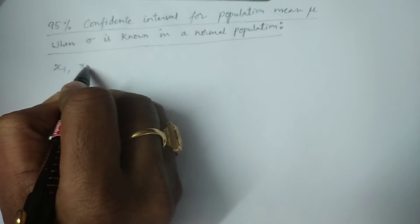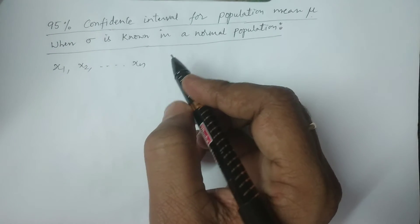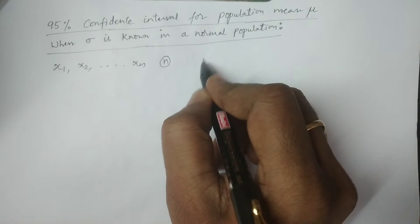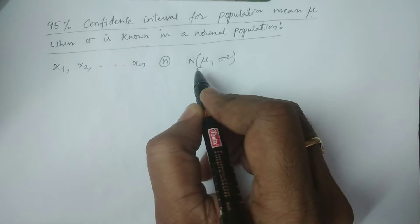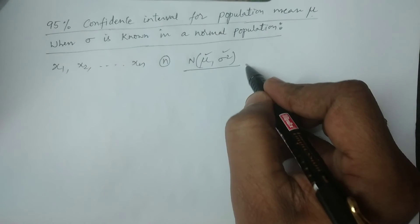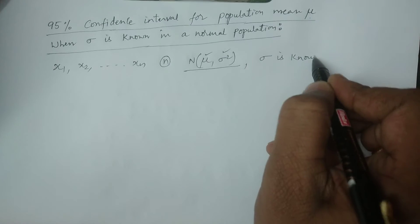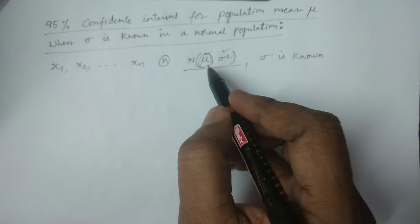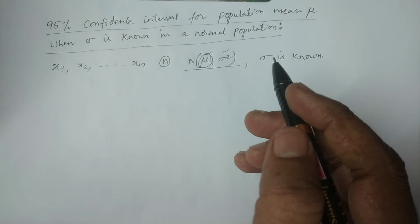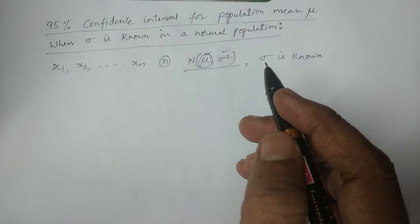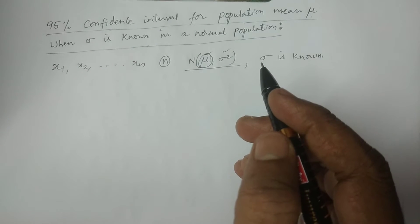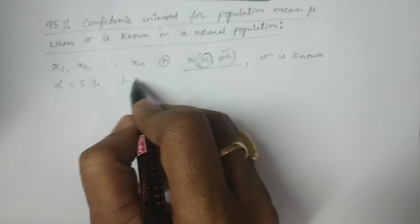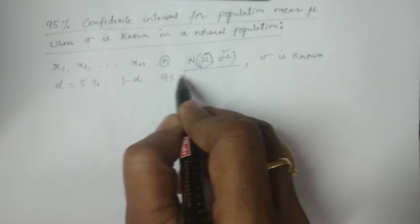I am considering that x₁, x₂, and so on, xₙ be a random sample of size n, which is drawn from a normal population with mean mu and variance sigma square. These are the parameters: mu and sigma square. Here we consider sigma is known — sigma is a known value — then we have to estimate the population mean mu in an interval. The interval having 95% confidence coefficient means 1 minus alpha; if alpha equals 5%, then 1 minus alpha is 95%.